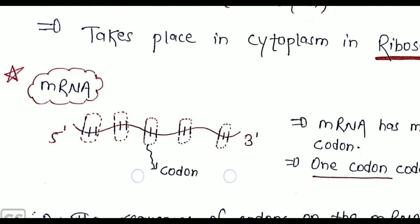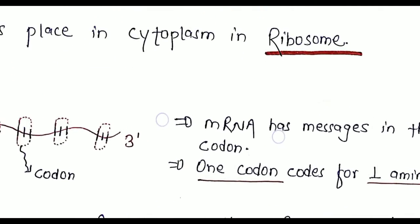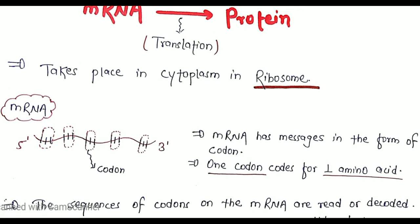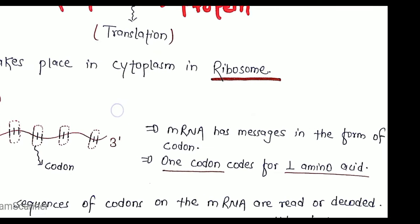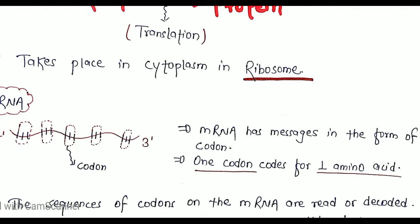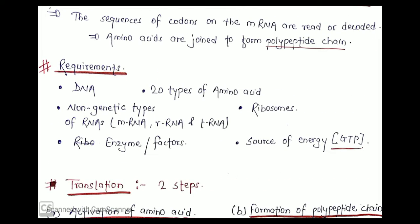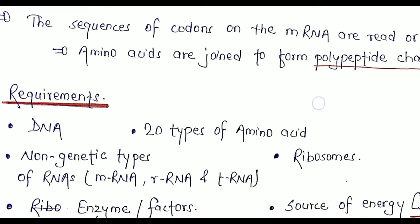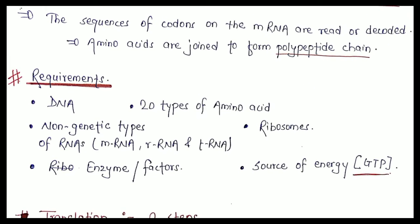The codon is a triplet of nitrogenous bases, and mRNA carries messages in the form of codons. There are 64 codons in total, of which 61 codons code for amino acids and three remain silent — they are called nonsense codons or stop codons. One codon codes for only one amino acid. The sequence of codons on the mRNA is read, decoded, or translated, and amino acids are joined to form a polypeptide chain called a protein.